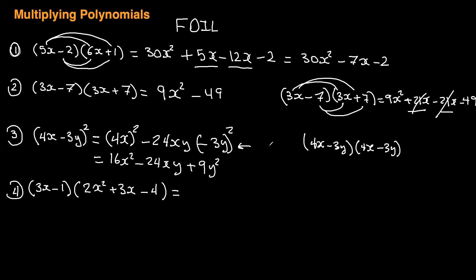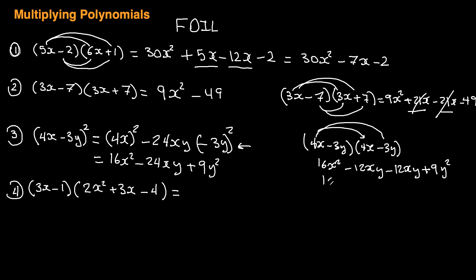Someone might argue the shortcut doesn't work, so let's foil it to verify. 4x times 4x is 16x squared. 4x times negative 3y is negative 12xy. Negative 3y times 4x is another negative 12xy. Negative 3y times negative 3y is plus 9y squared. Collecting like terms: 16x squared, negative 12 minus 12 is negative 24xy, plus 9y squared — which matches. So now we know it works.